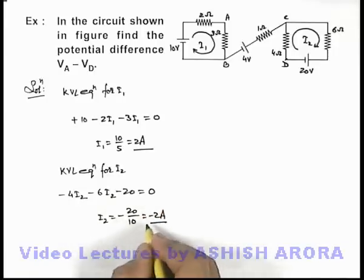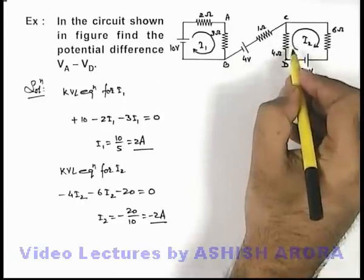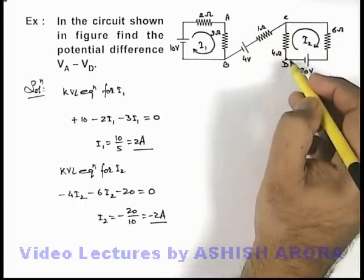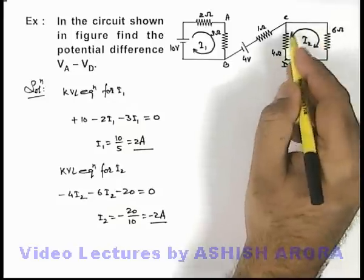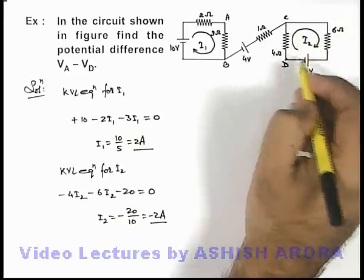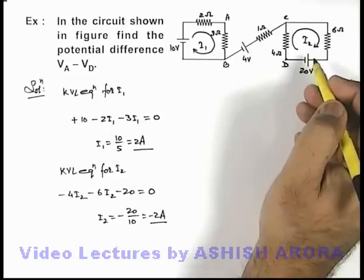This could also be obtained directly. Here also, as no current will flow through this branch because no return path is there, we can consider 6 ohm and 4 ohm in series across 20 volt battery. So the current will be 20 by 10, that'll be 2 ampere only.